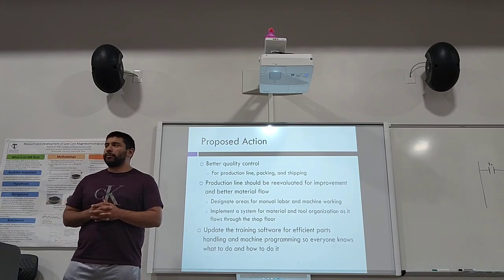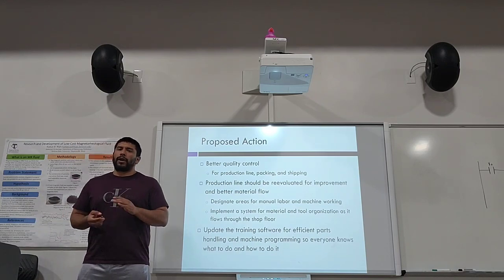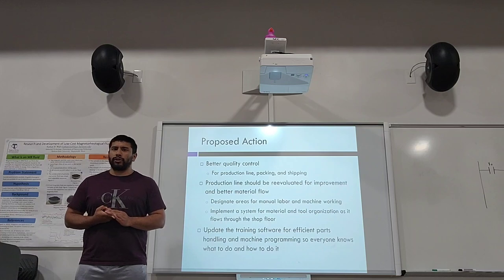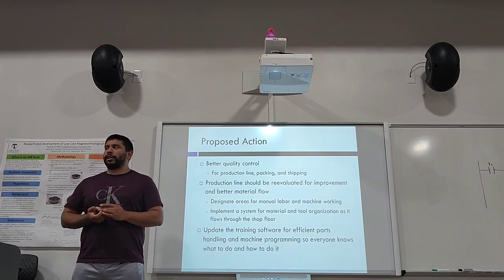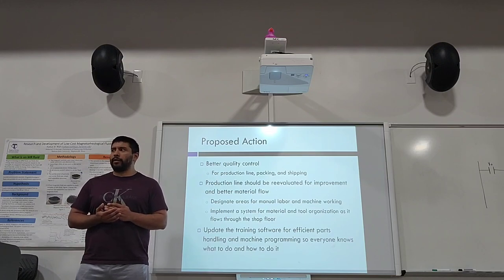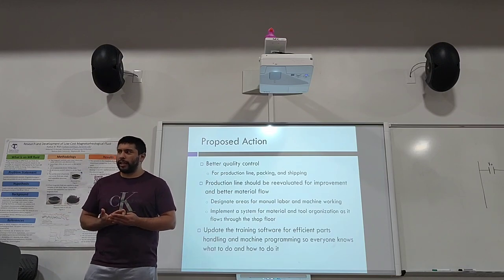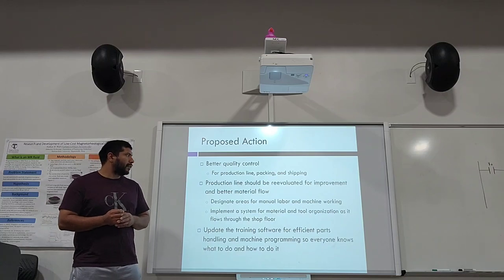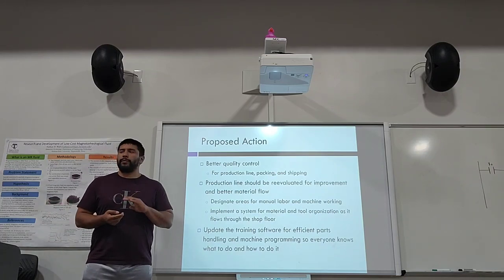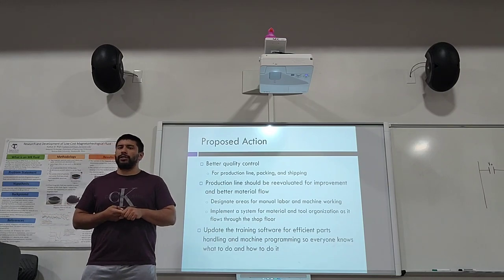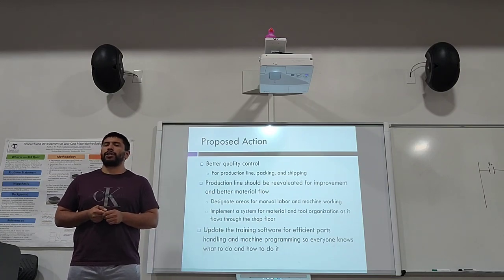The proposed action plan is to have better quality control in place for the production line, packing and shipping. Production lines should be reevaluated for improvement and better material flow. We can designate areas for manual labor and machine working, and implement a system for material and tool organization as it flows through the shop floor.